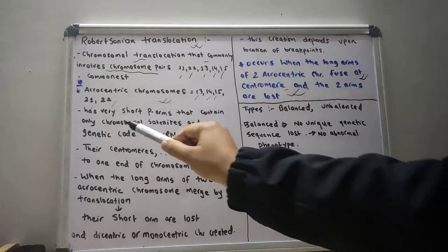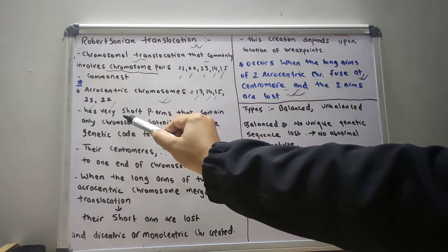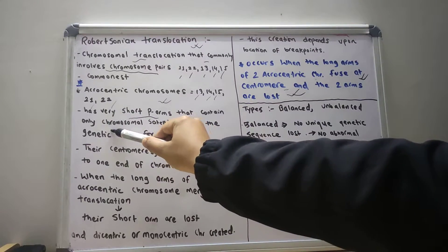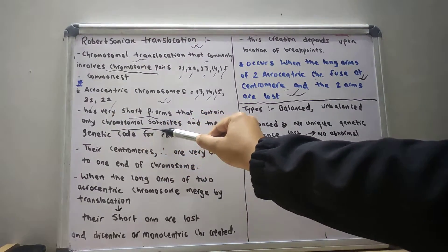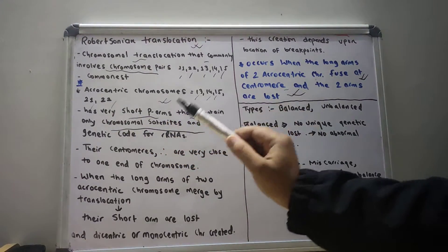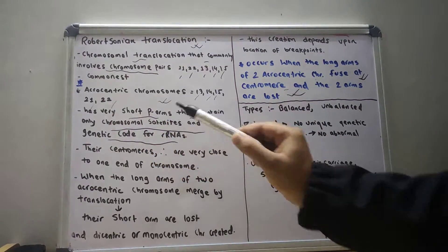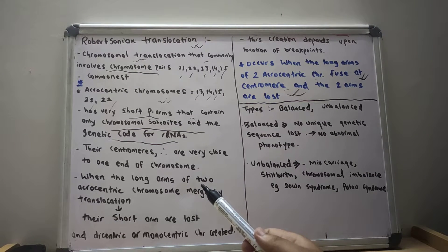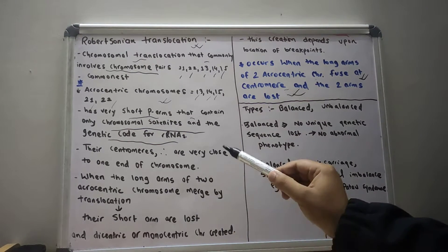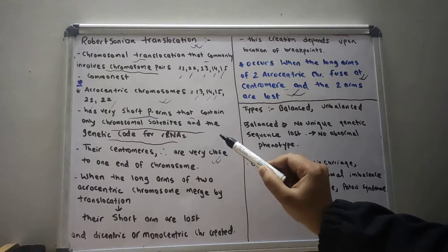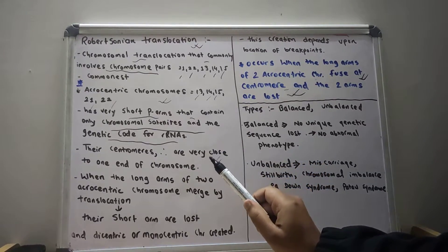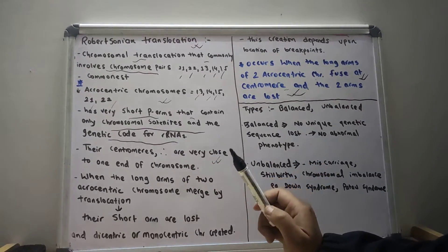These acrocentric chromosomes have very short p-arms that contain only chromosomal satellites and the genetic code for the ribosomal RNAs. Their centromeres are therefore very close to one end of the chromosome.